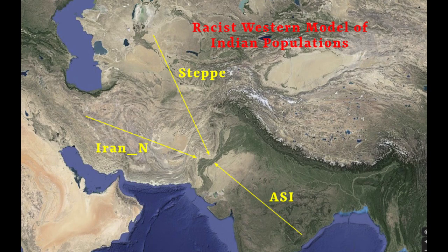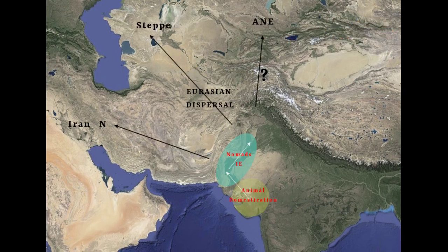The reason why they say this is because Indians and Pakistanis have DNA in common with most other parts of Eurasia - that includes the Steppe, IranN, and also ASI. Because we have DNA in common with all of these people, it makes it somewhat easy for them to argue that there were migrations from these regions into India.